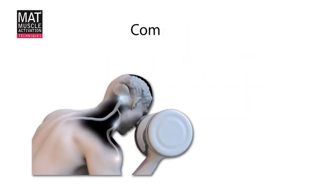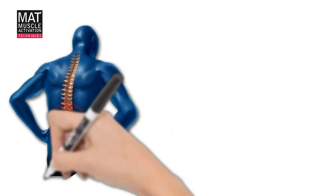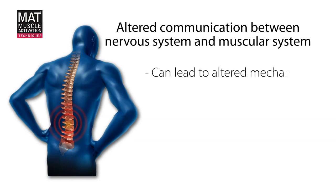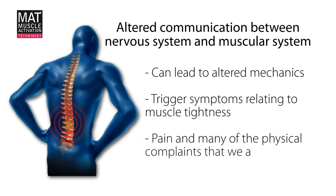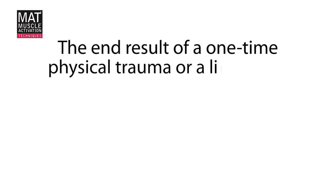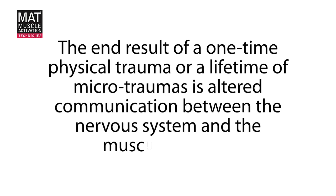The communication between the nervous system and the muscular system can break down over time. This altered communication between the nervous system and the muscular system can lead to altered mechanics, which can trigger symptoms relating to muscle tightness, pain, and many of the physical complaints that we associate with aging. The end result of a one-time physical trauma or a lifetime of microtraumas is altered communication between the nervous system and the muscular system.